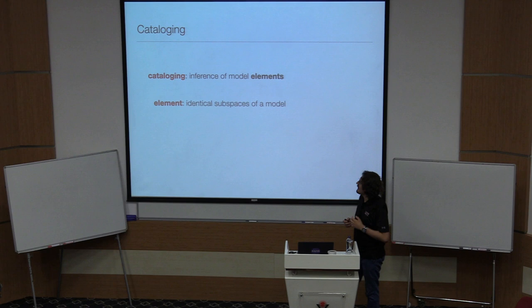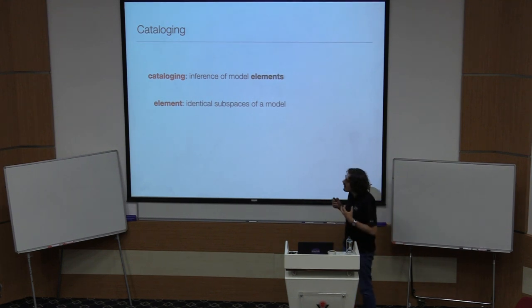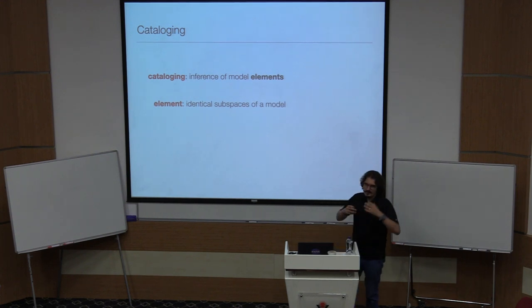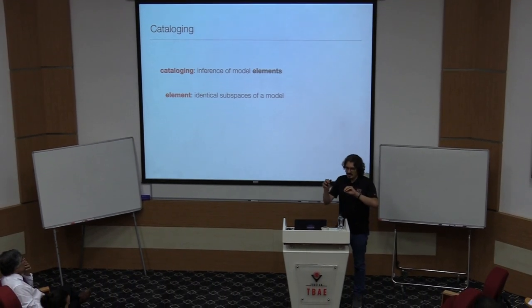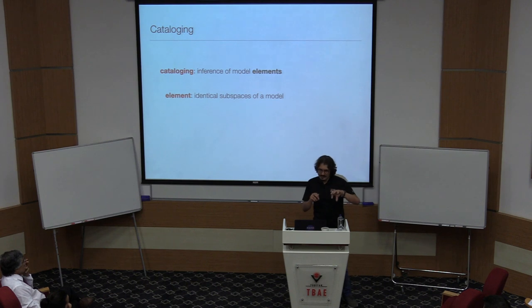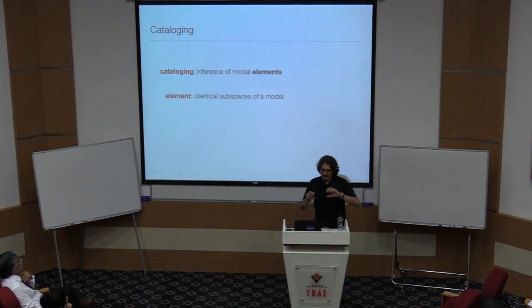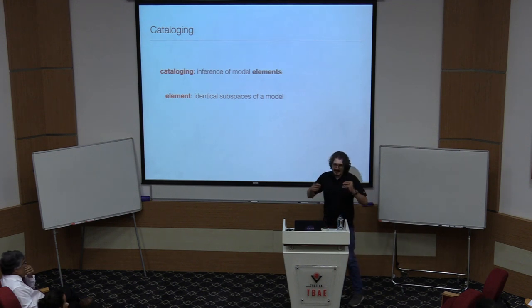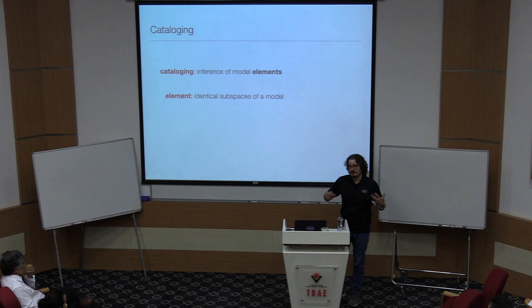Cataloging is essentially the inference of some model elements. An element is the so-called identical sub-part of a model. For example, imagine you are an astronomer given an astronomical image — say a Hubble Space Telescope image — and you are trying to fit for the positions and fluxes of point sources. Those point sources are identical sub-parts of your model. They have certain degrees of freedom such as position, flux, and color. That makes up your model.